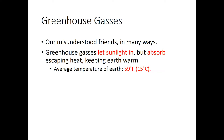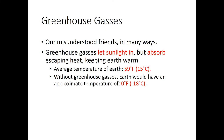Because of greenhouse gases, the average temperature of our Earth is 59 degrees Fahrenheit. If we had no greenhouse gases, our approximate temperature would be around 0 degrees Fahrenheit — substantially colder. In fact, this temperature would render much of the Earth uninhabitable. So yay, greenhouse gases!